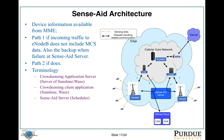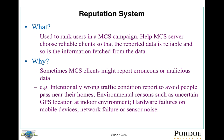There are three components. One is the crowd-sensing application server, which is the server of Sunshine or Waze. Another is the crowd-sensing client application. And the Sense8 server, which sits in between. The crowd-sensing application server gives tasks to the Sense8 server. Sense8 server assigns these tasks to the crowd-sensing client application. After the client application finishes the task, it gets the data back to the Sense8 server, which then forwards this data back to the crowd-sensing application server.